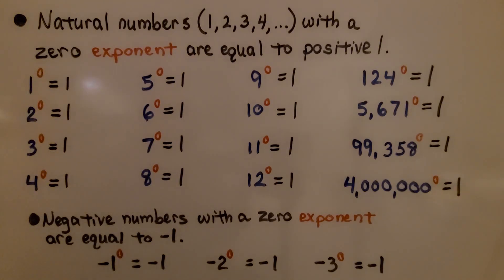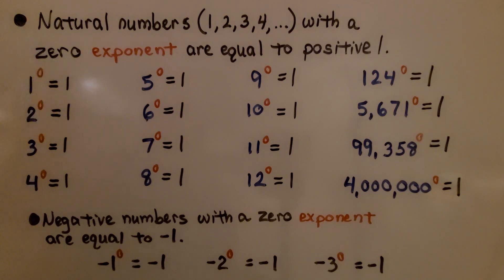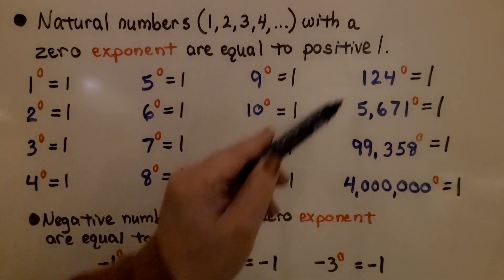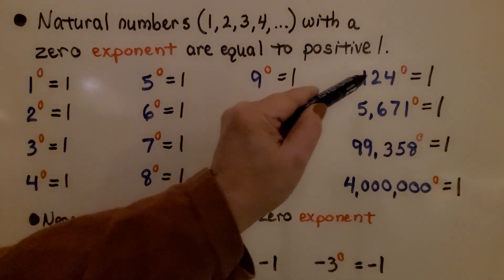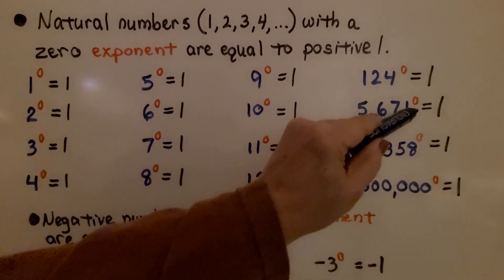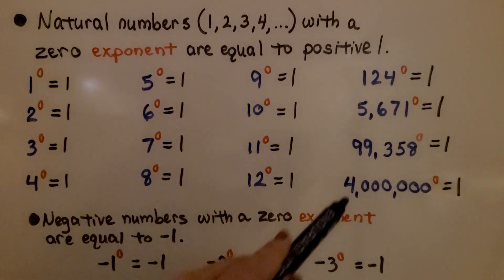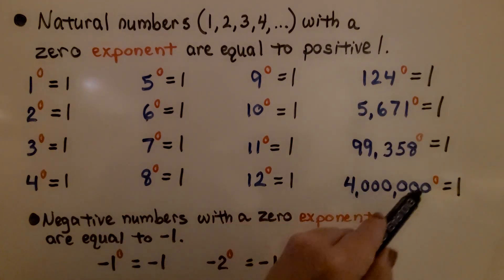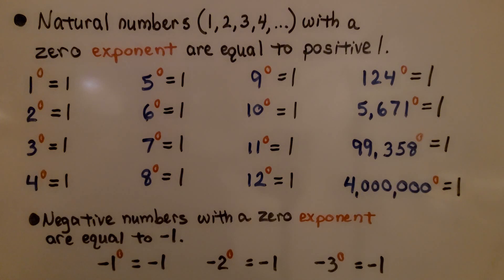Natural numbers — 1, 2, 3, 4, and so on — with a zero exponent are equal to positive 1. If we have 1 to the zero power, it's equal to 1. 2 to the zero power, that's equal to 1. 3 to the zero power, 4 to the zero power — 124 to the zero power is equal to 1. 5,671 to the zero power is equal to 1. Even 4 million to the zero power is equal to 1.